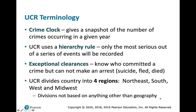The UCR also reports exceptional clearances — crimes that are cleared without an arrest because they know who committed the crime but are unable to make an arrest, whether because the offender has fled, died, is outside jurisdiction, or for some other reason beyond the police department's control. The UCR also divides the country into four regions: Northeast, South, West, and Midwest.